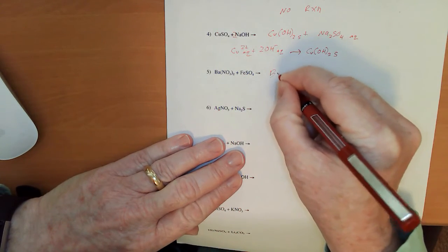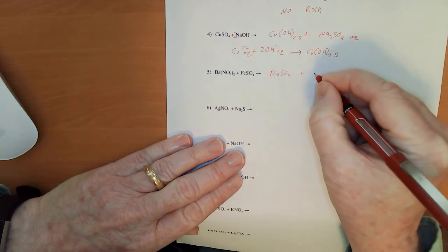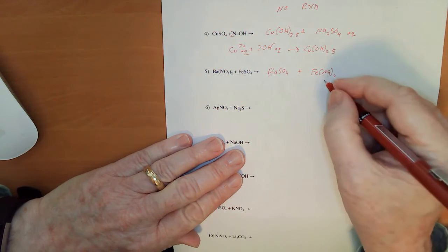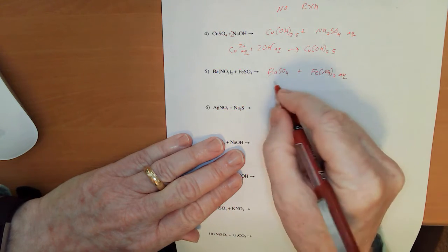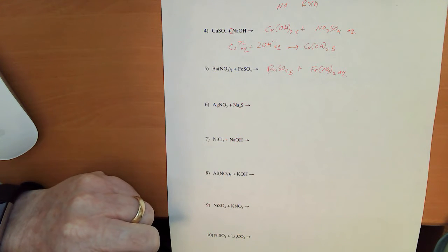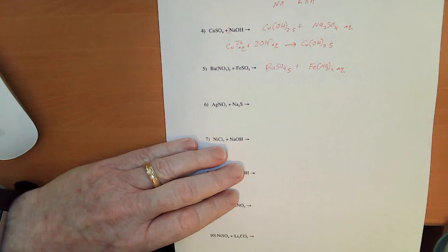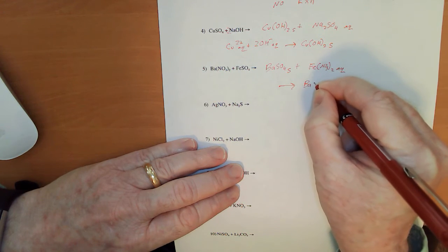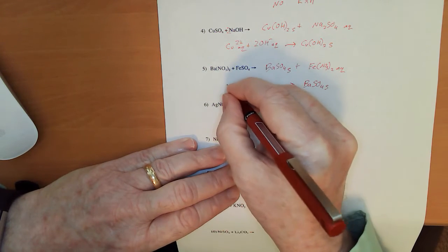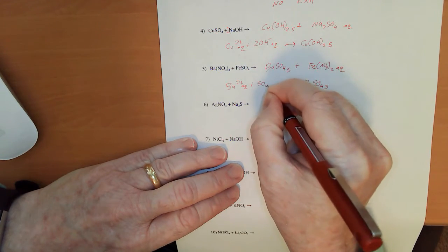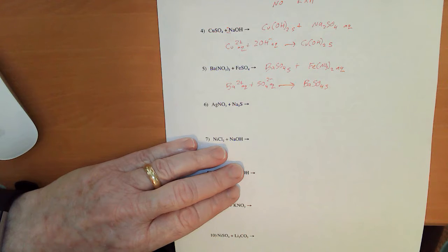Here we've got a BaSO4 and an Fe NO3 sub 2. Nitrates are always soluble. So, that's an aqueous. Barium sulfate, that's our famous precipitate that we drink when we're getting medical imaging done. It's completely toxic, but it's also insoluble, so our body can't absorb it, and we just poop it right out. What does that give us? BaSO4 solid. What ions are going into there? Ba2 plus aqueous and SO4 2 minus aqueous.